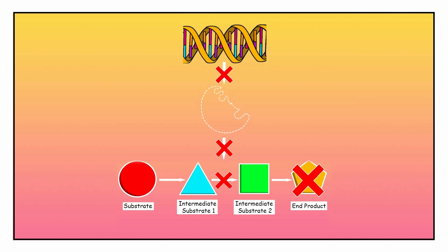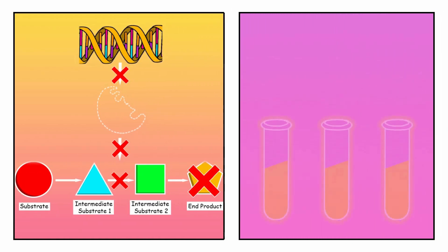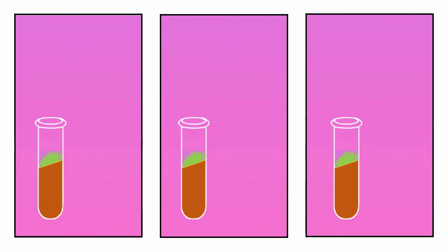Later, to determine exactly which substance these mutants could not produce, essential products like amino acids, vitamins, and glucose were introduced to their minimal media. Glucose replaced the more complex carbon source sucrose. This time, three mutant strains were found to grow on the complete medium, but not on the minimal medium.